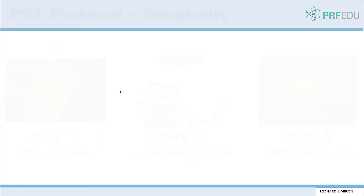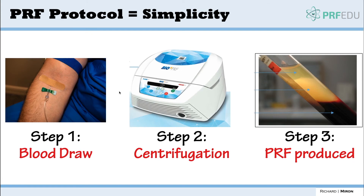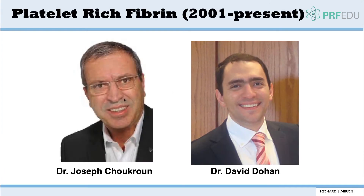With the PRF protocol, one advantage is that it's much simpler — you basically just draw blood. It's one step, one protocol, and then you end up with platelet-rich fibrin. The one disadvantage is that you have to do everything relatively quickly, because clotting is going to occur. You have to draw the blood and spin it rather quickly, and thereafter you get a clot that forms.